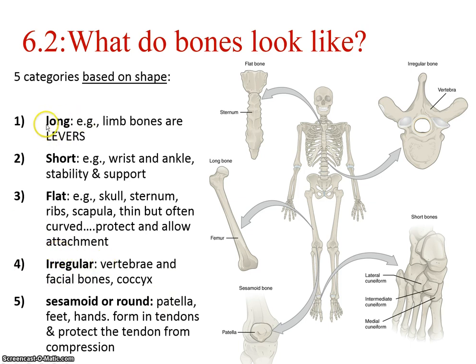Long bones are predominantly what you find in your upper and lower limbs. They tend to be greater in length than width. Short bones have relatively equal length, width, and thickness — this is almost exclusively your carpals and tarsals. Long bones are levers, while short bones give you stability and support.